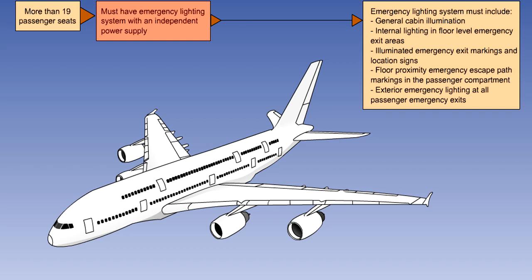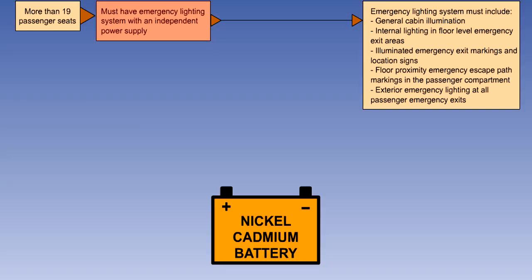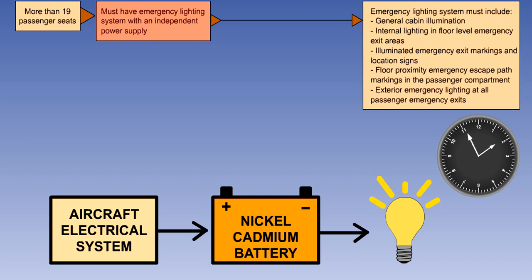We will now look in greater detail at the requirements for aeroplanes with more than 19 passenger seats. By doing this, the requirements for the other groups will also be covered. There must be an independent emergency lighting system. To achieve this, the emergency lights are normally battery operated. The batteries are usually of the nickel cadmium type, normally kept fully charged by the aeroplane's electrical system. The batteries must be able to maintain the emergency lights at full brightness for a minimum of 10 minutes.